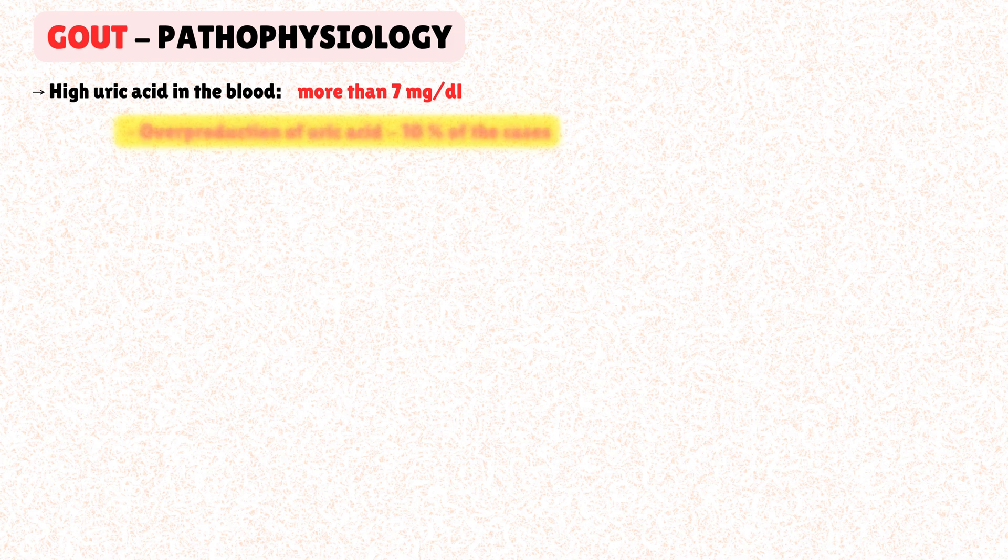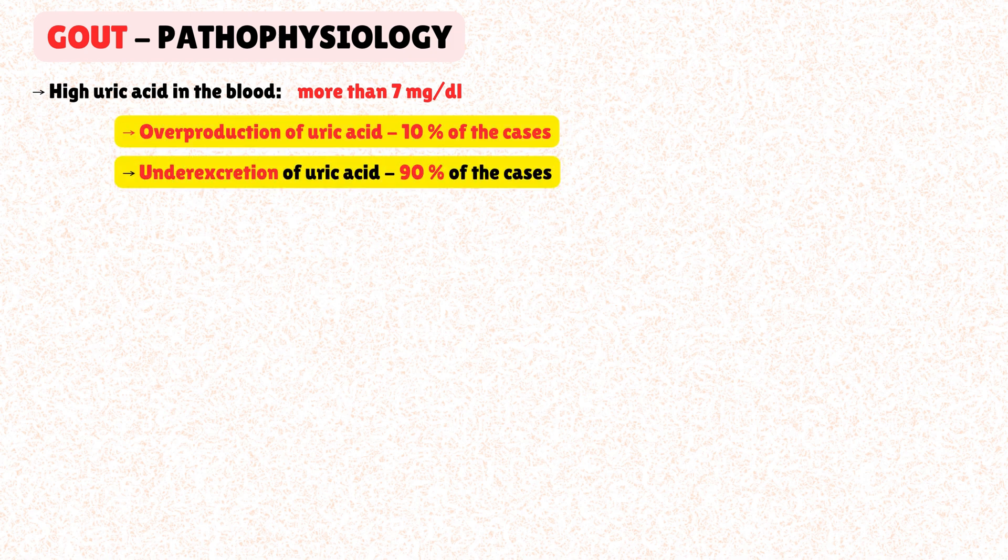Hyperuricemia is defined as high uric acid in the blood, particularly more than 7 mg per deciliter. This condition results from either an overproduction of uric acid, which occurs in approximately 10% of cases, or in about 90% of cases, an under-excretion of uric acid.